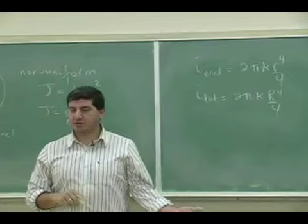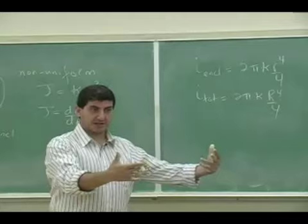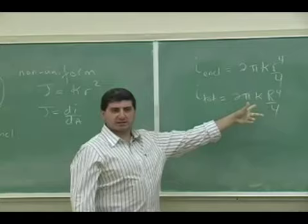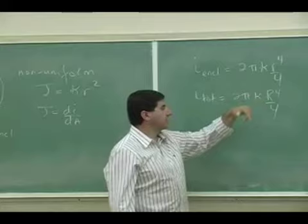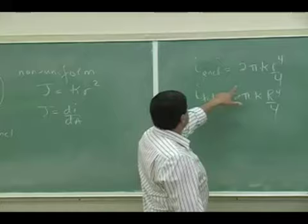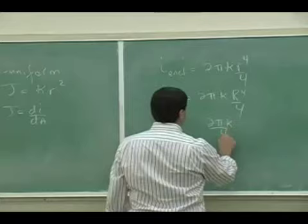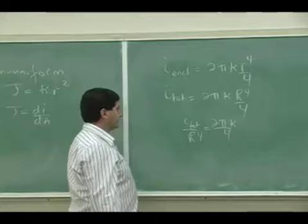And you're going to get 2 pi kappa R to the fourth over four. But this time, it's the total radius, right? So I didn't really have to start the integral all the way from the beginning. I knew if I enclosed was 2 pi kappa R to the fourth over four, I total was going to be 2 pi kappa big R to the fourth over four. So now, I want to get rid of this 2 pi. So what I do is I say 2 pi kappa over four is equal to I total over big R to the fourth.